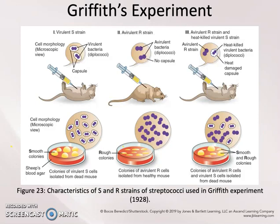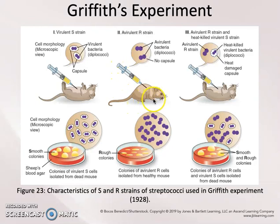The smooth strain, when injected into a laboratory animal, would cause death, whereas the R strain, when injected into a laboratory animal, would not make that animal sick at all. These are referred to as a virulent, or disease-causing strain, and an avirulent, or non-disease-causing strain.